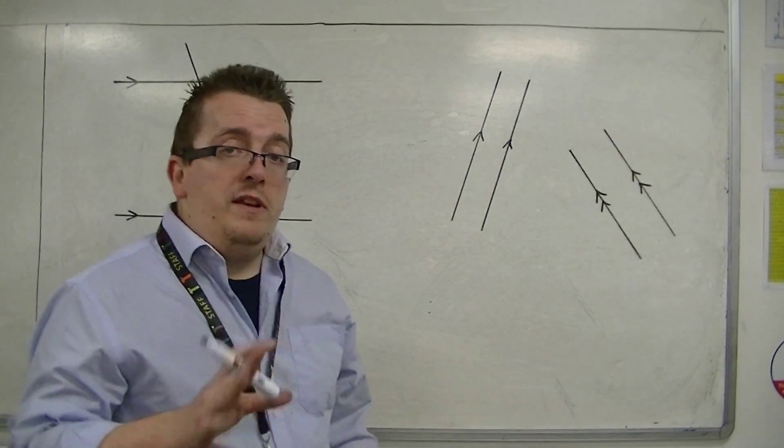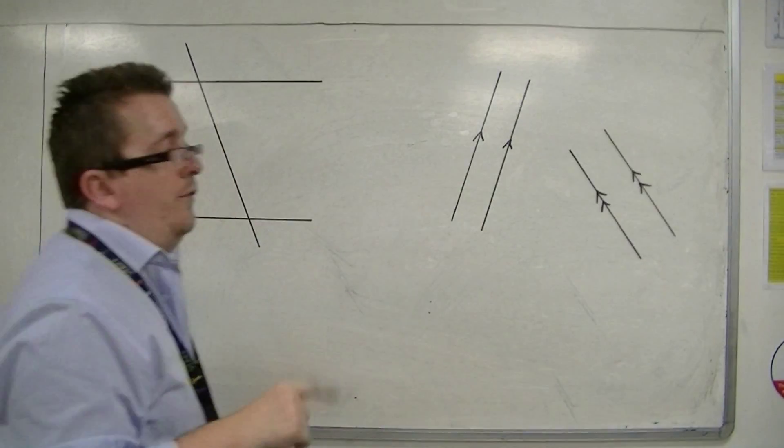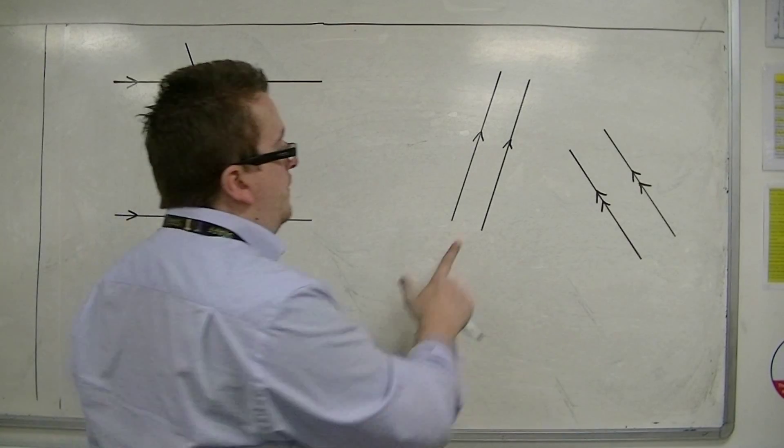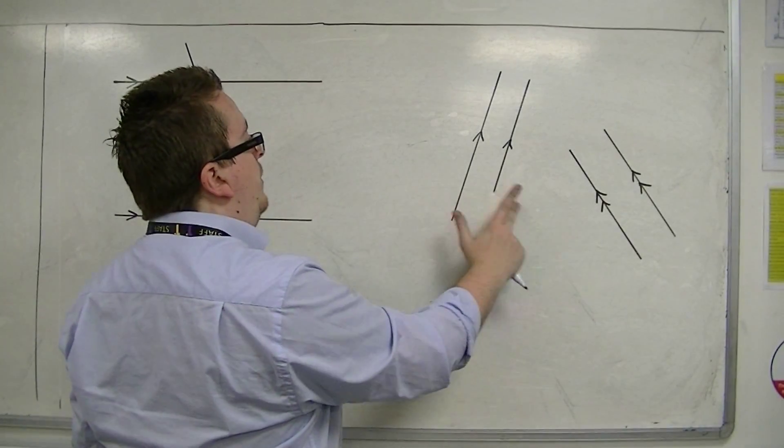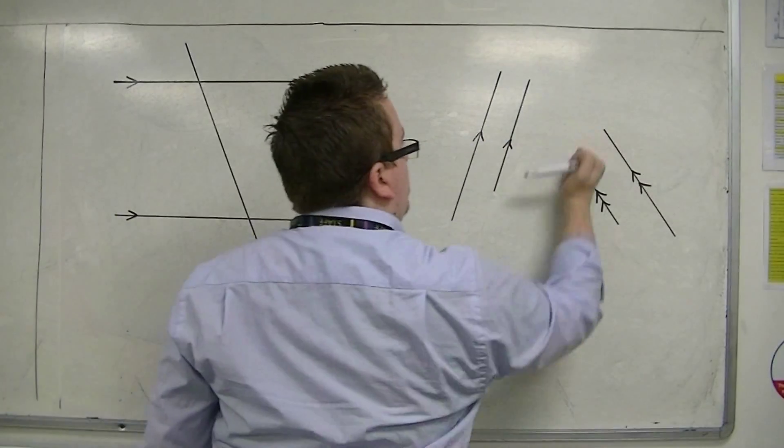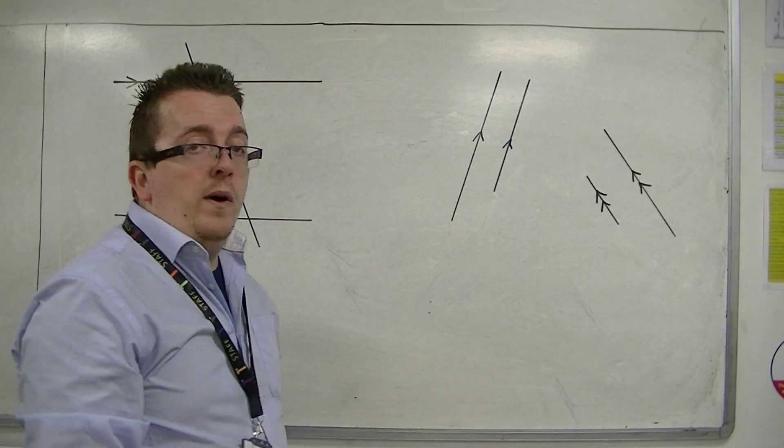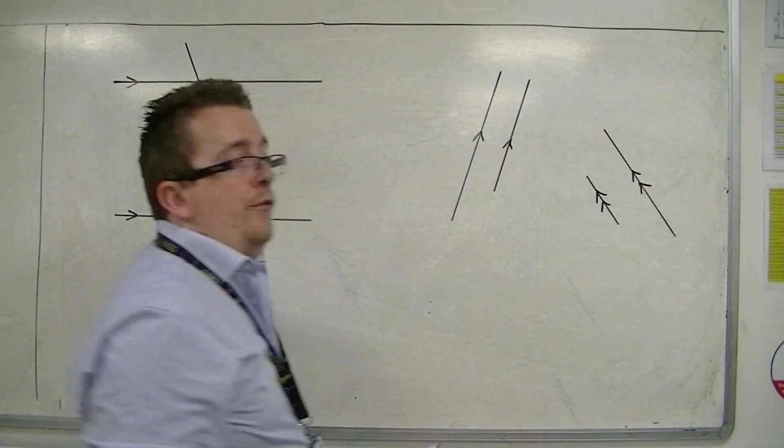Now, one thing you need to make clear is that parallel lines do not need to be of equal length like I've drawn them. So I could just rub that bit off or rub that bit off. This line is still parallel to this one, and this line is still parallel to that one.